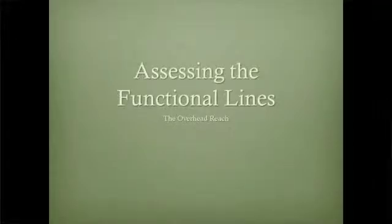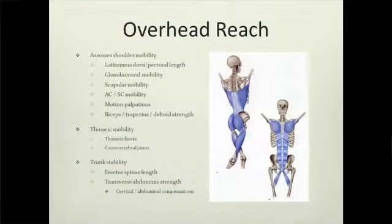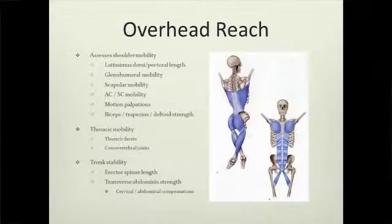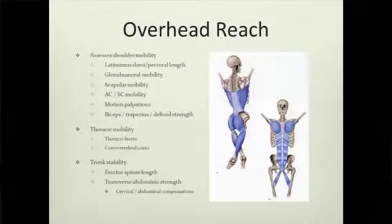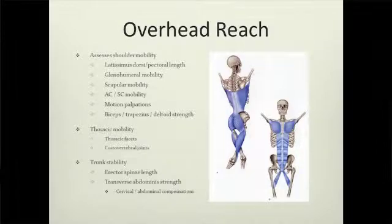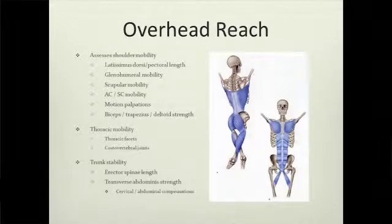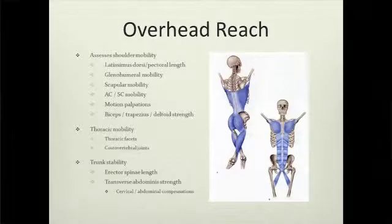So, assessing the overhead reach. We're going to assess shoulder mobility, looking at latissimus dorsi, pectoral rhomboid length, glenohumeral mobility, scapular mobility, AC and SC joint mobility, biceps, trapezius, and deltoid strength. We can also look at thoracic mobility — both the spine, facet joints, costal vertebral joints, and the ribs. And then trunk stability: is there enough length to the retrospinae and the thoracolumbar fascia? Is there enough strength to the transverse abdominis to let the movement occur?